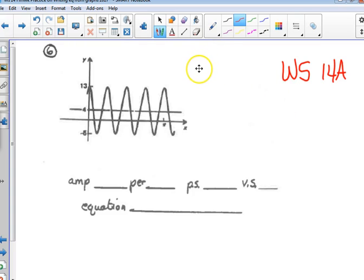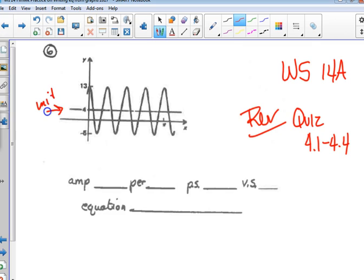As review for the quiz that covers 4.1 to 4.4, we're going to do this question on worksheet 14. We are reviewing. Now, can anybody tell me one of those things? This is the midline, which tells us the vertical shift is 4.